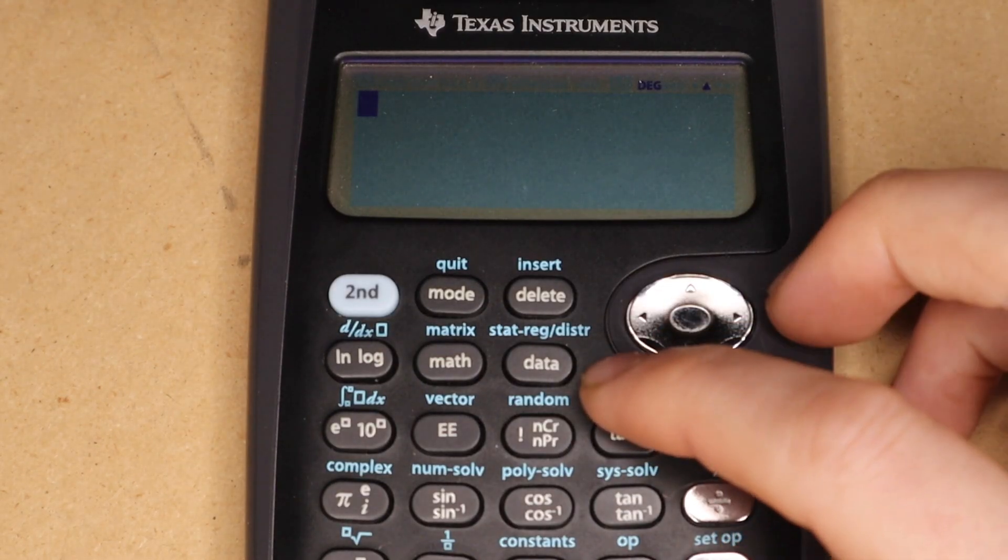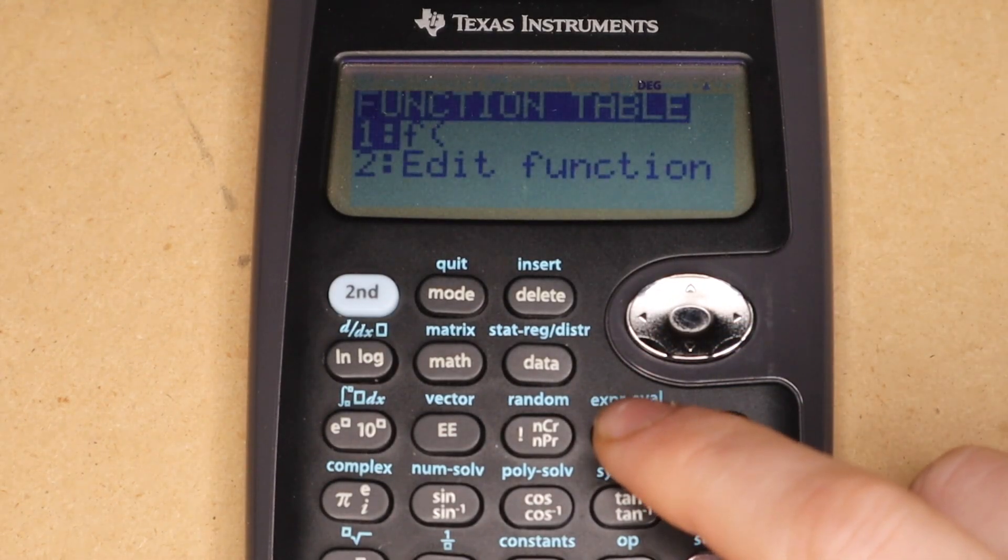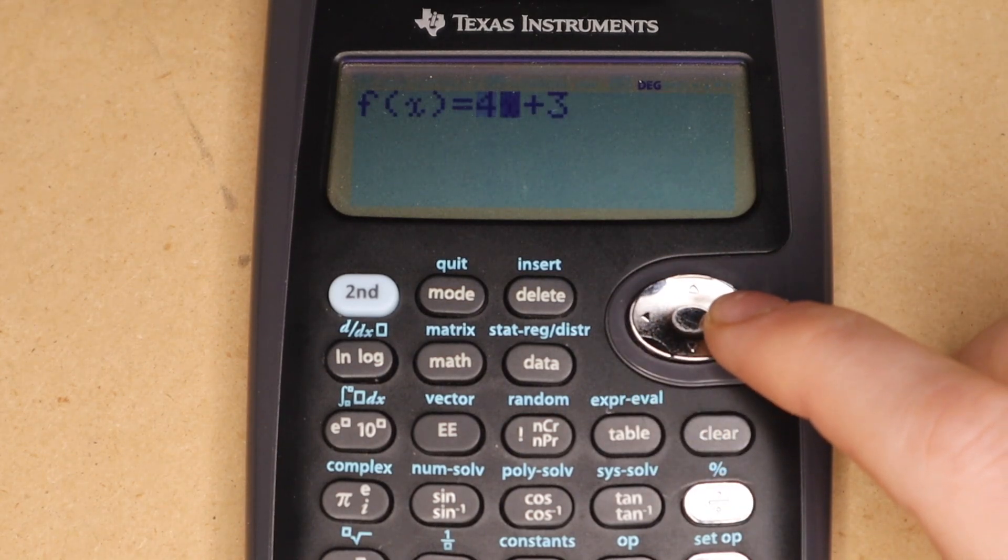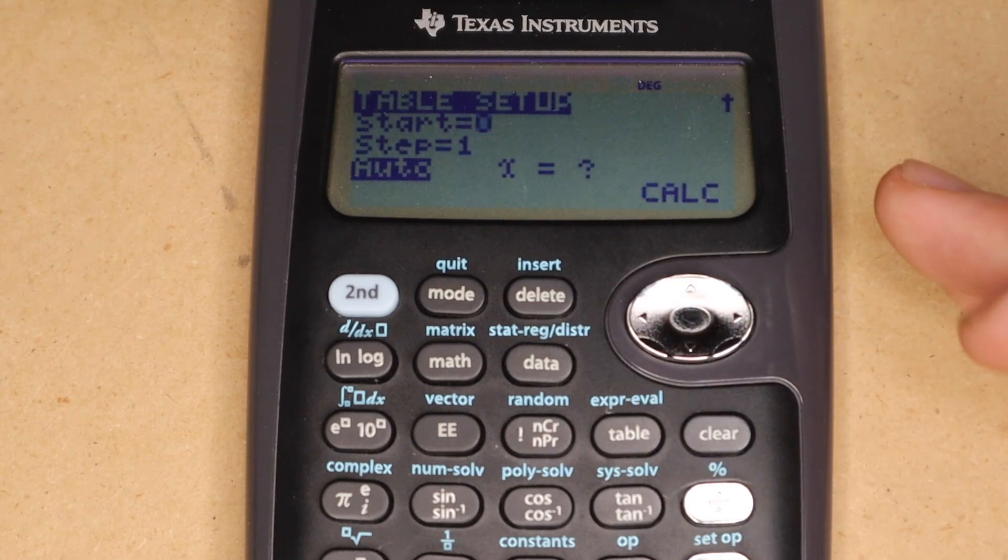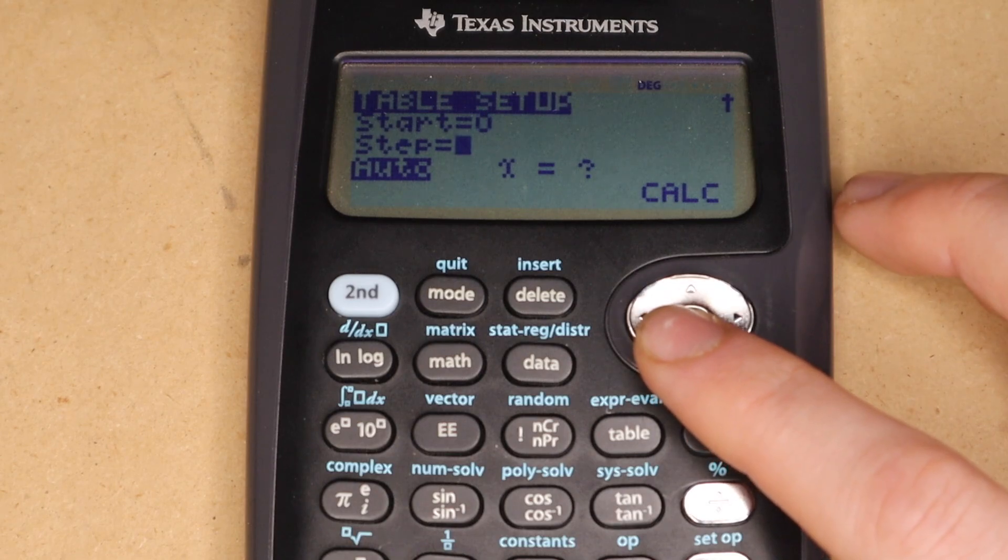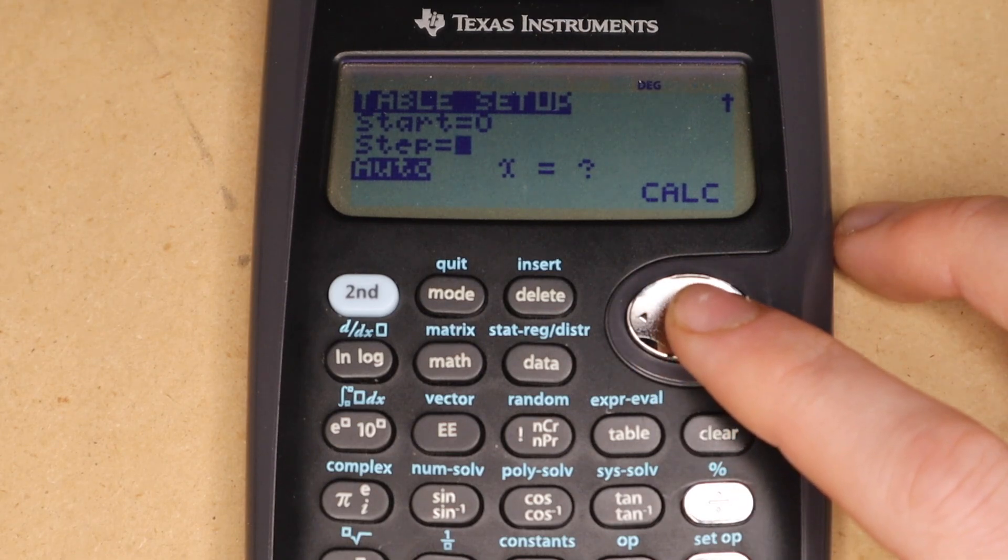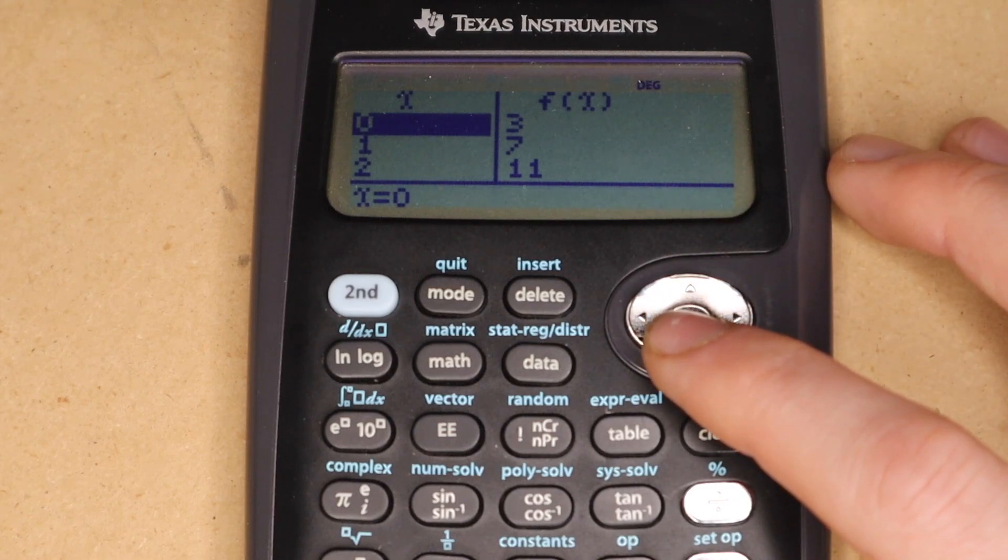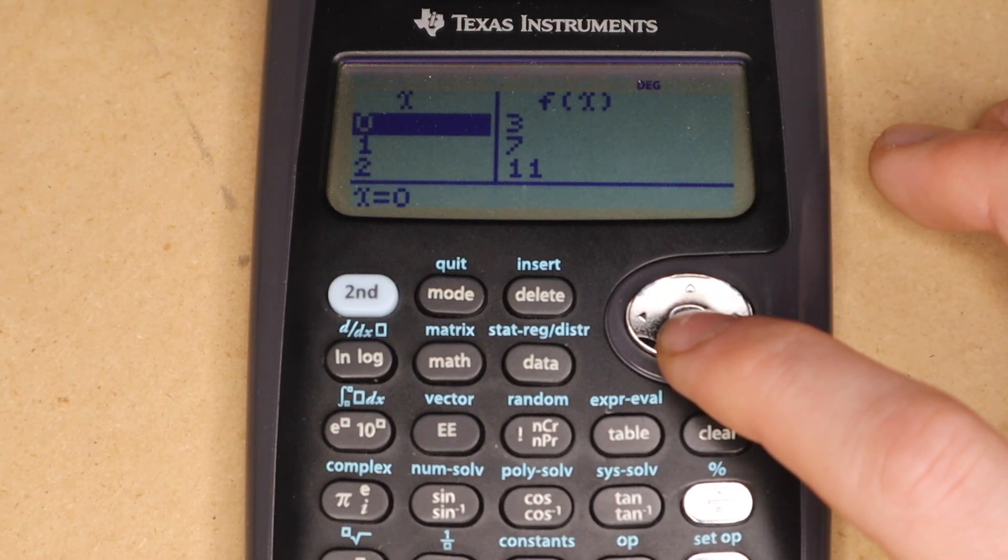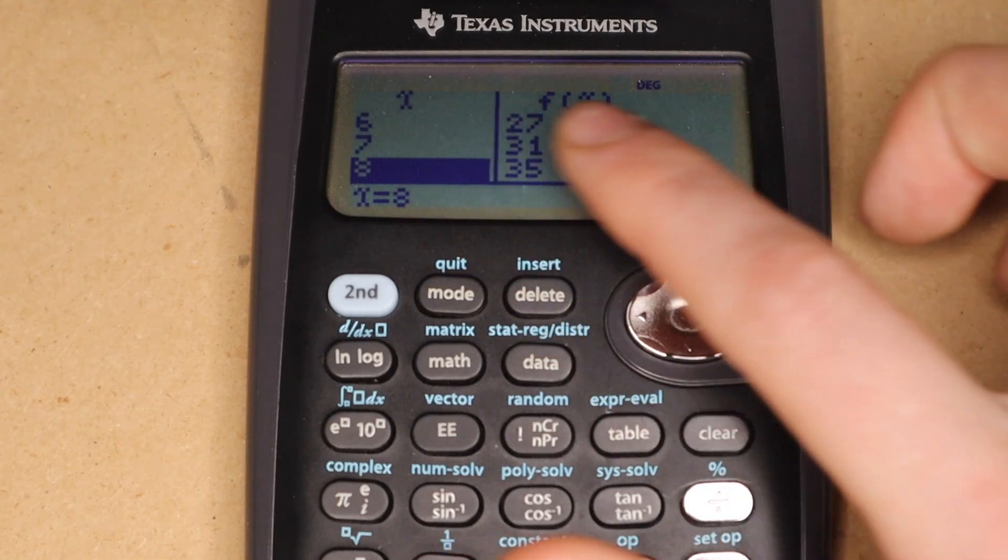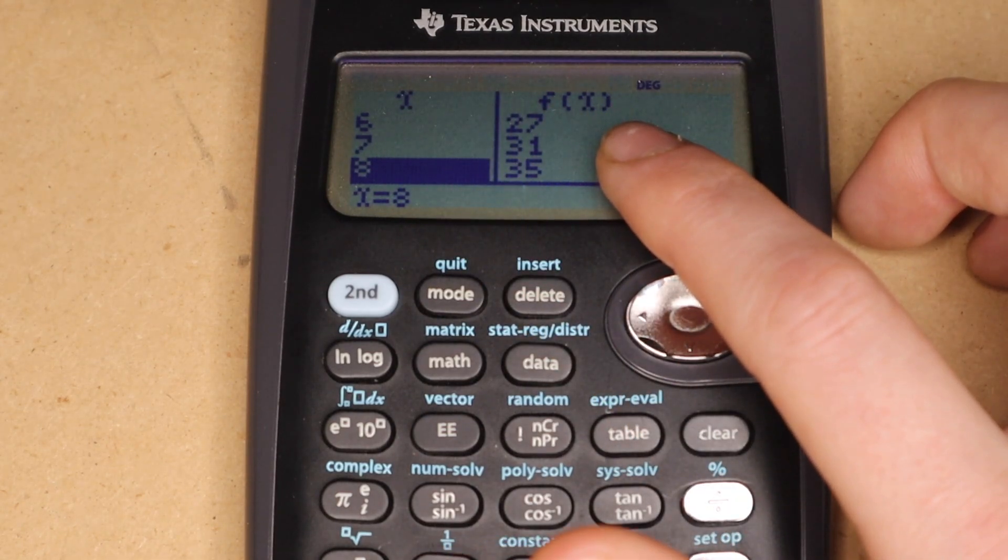And then finally, there is a table function. So if you press the table key, you can enter a function. I have this already entered here. And then you can choose the value that you want to start at. So I'll just keep that at 0. And then the step size is how large of a change you'll have between cells in the table. And then after you press enter a couple times, you'll get this table like you might see on a graphing calculator. And you can scroll through different values of x and see their corresponding values for f of x.